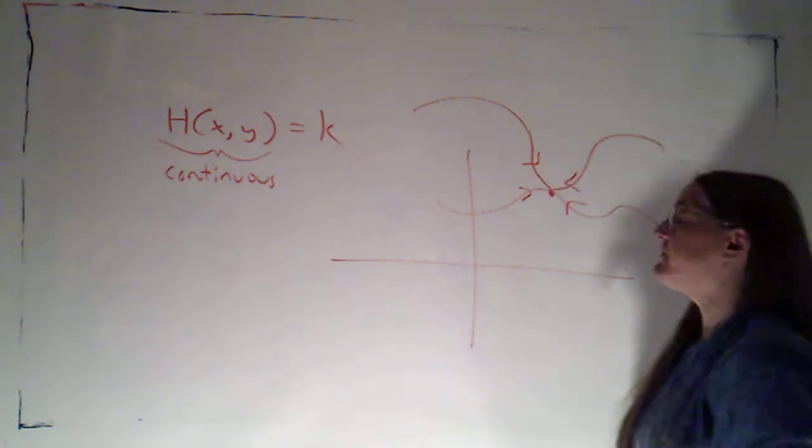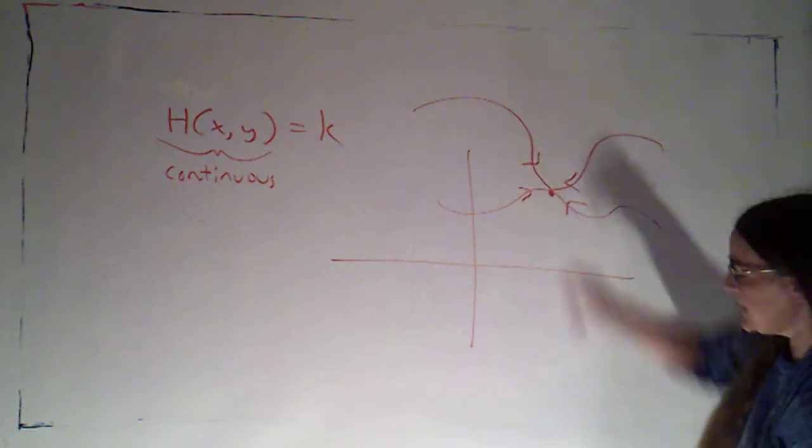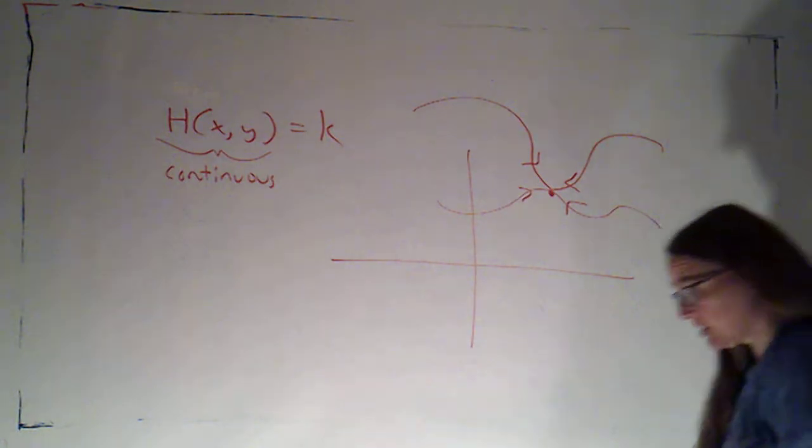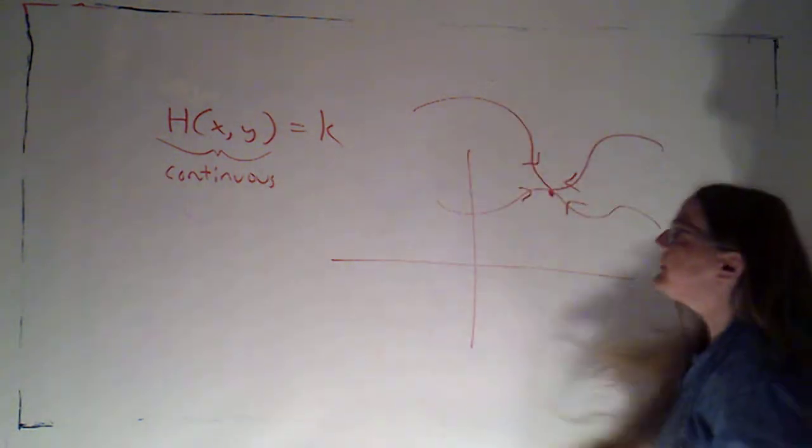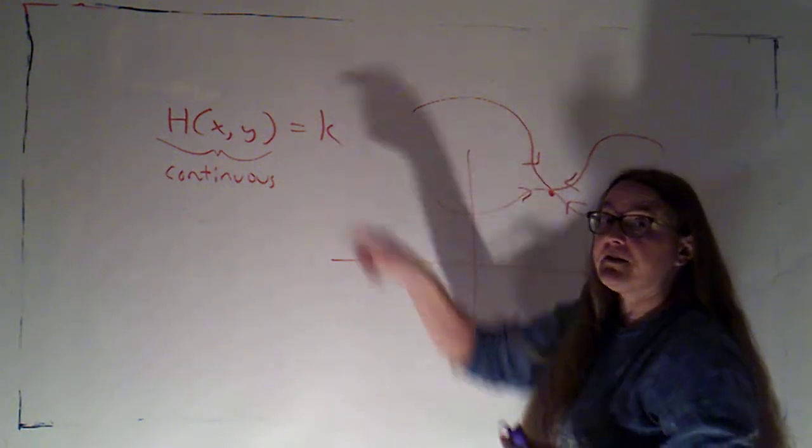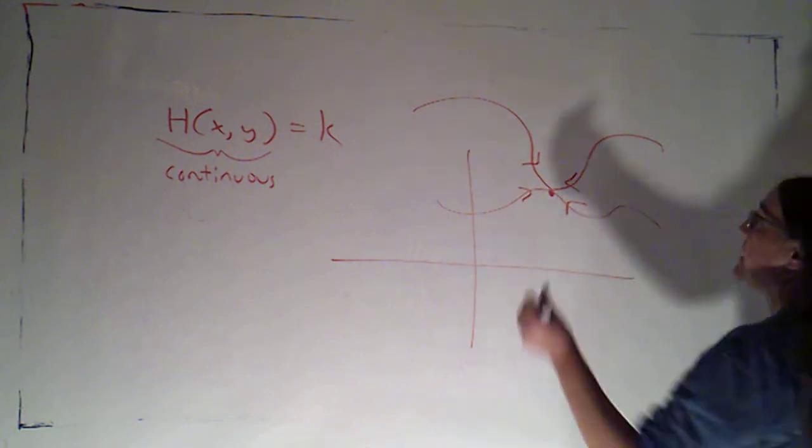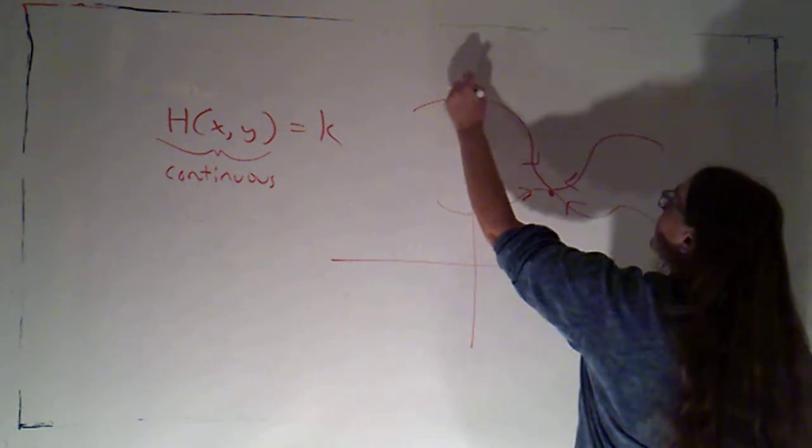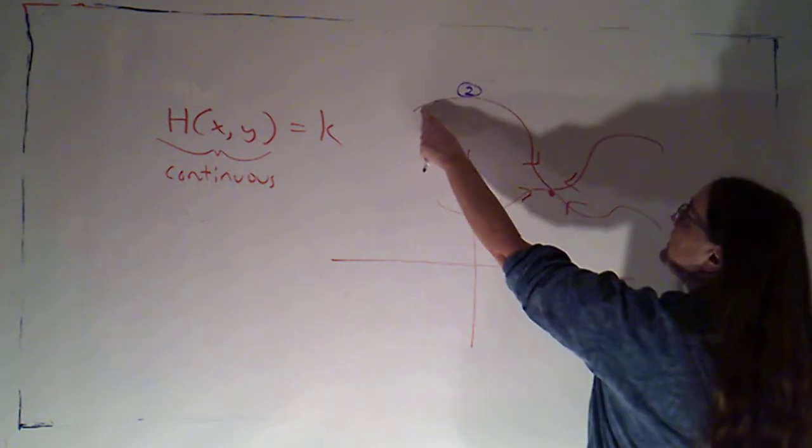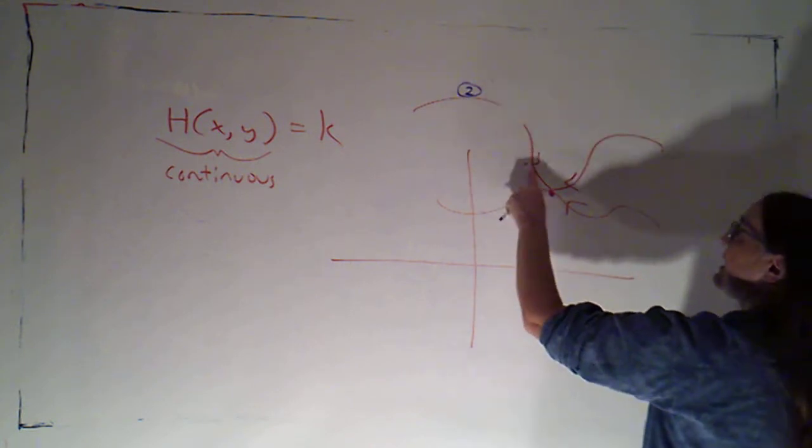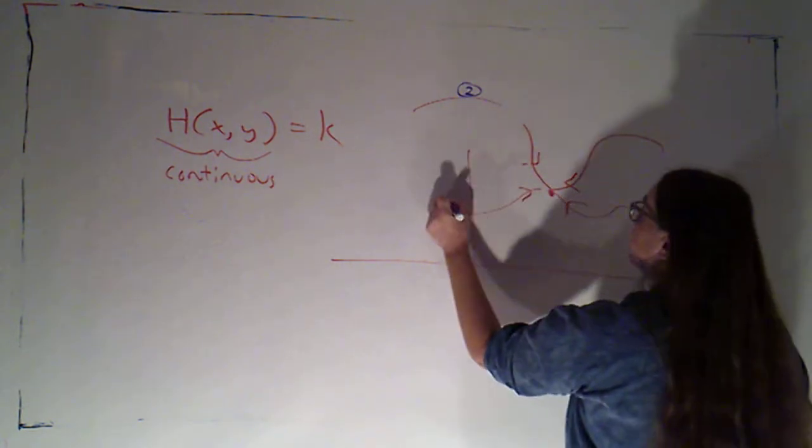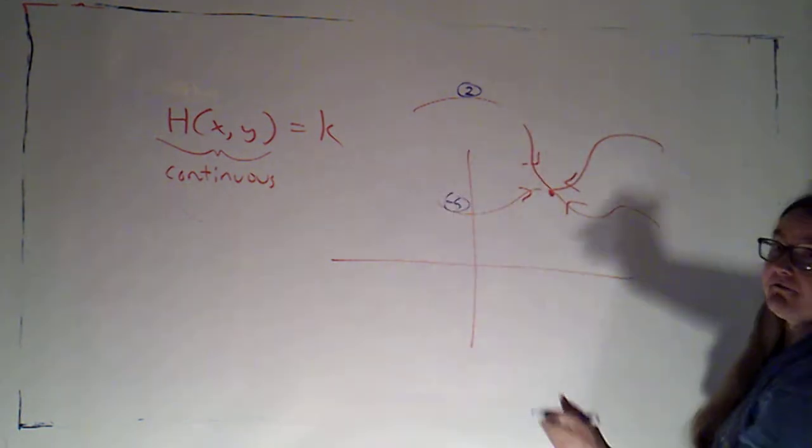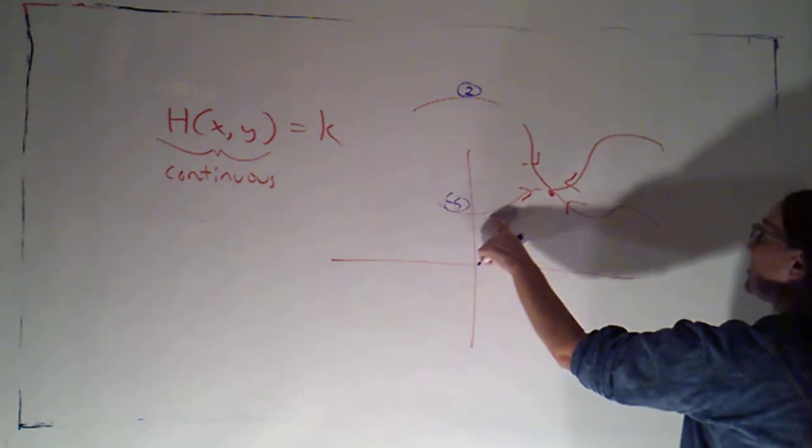And all of these curves would have to be level curves for that. But they could be level curves for different values. So maybe this is a level curve for 2. So along this curve, h is taking on a value of 2. But this is a level curve for negative 5. So along this curve, my function is negative 5.